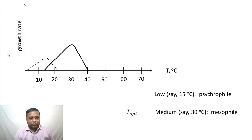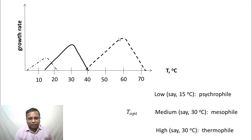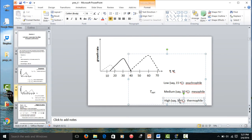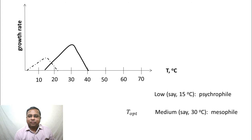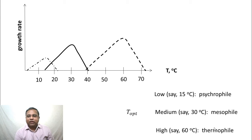If the temperature optimum is low, around 15°C, the organism is called a psychrophile — 'psychro' meaning low-temperature-loving, 'meso' meaning mid-temperature-loving. If the temperature optimum is high, around 60°C, the organism is called a thermophile.